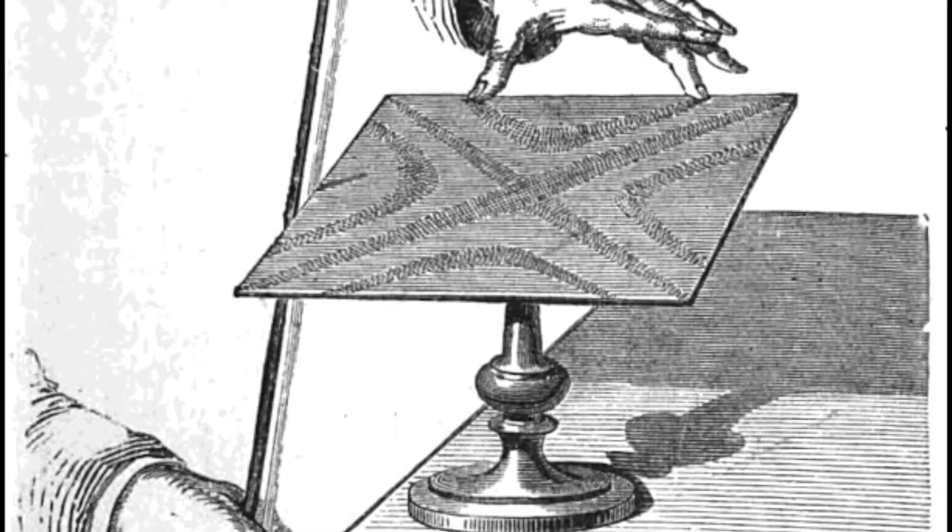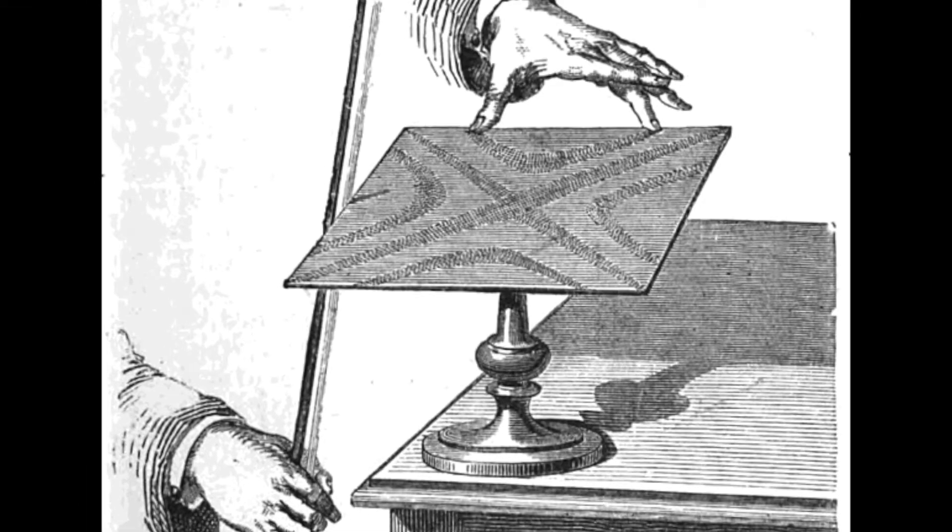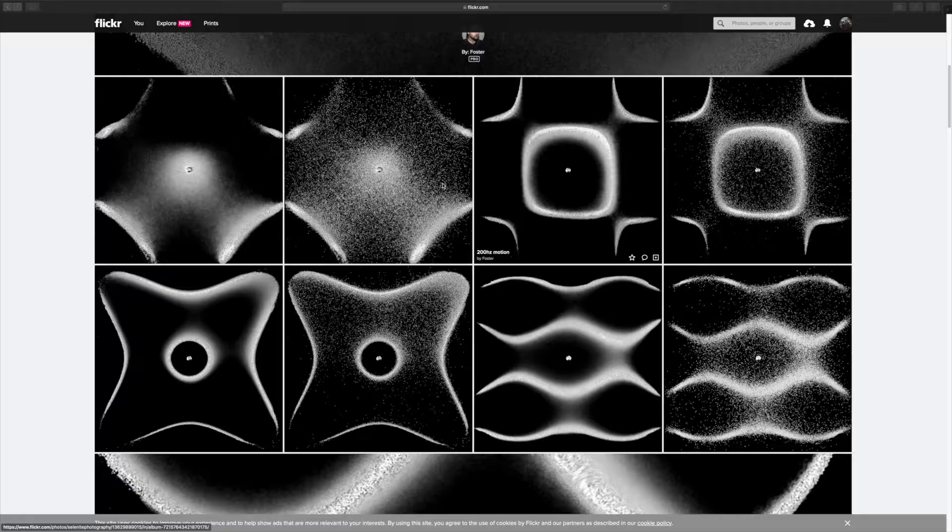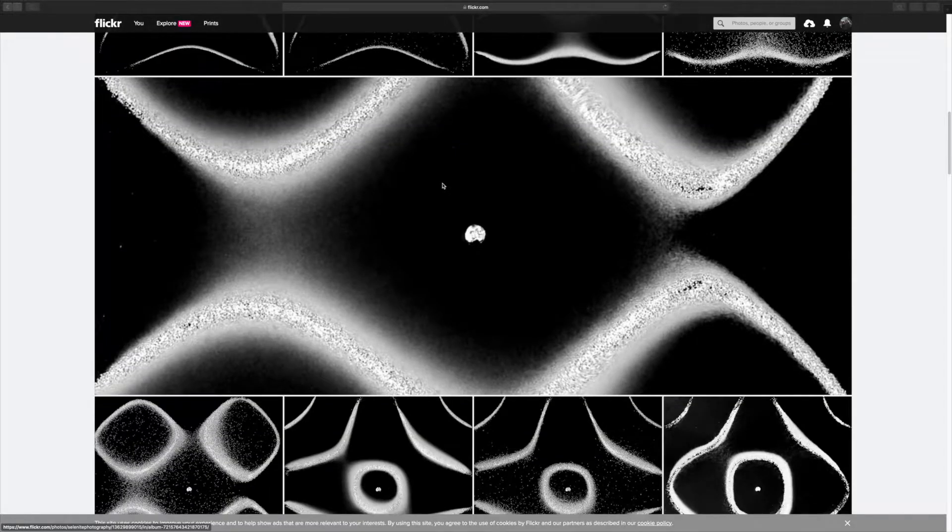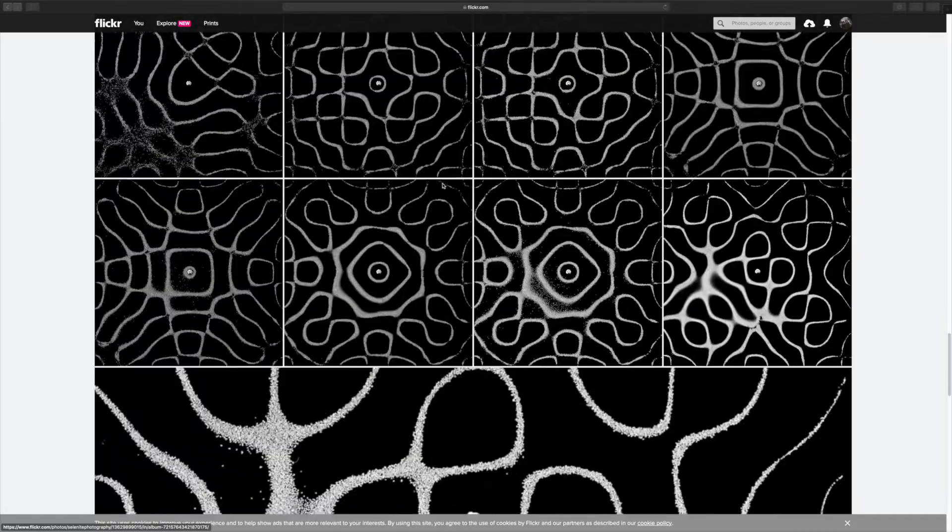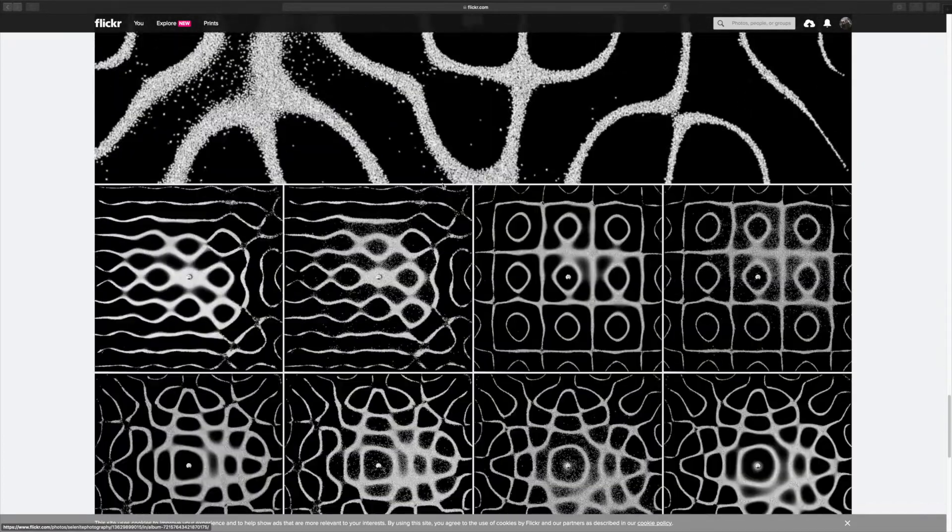Chladni ran a bow along the edge of a thin plate covered in flour and watched as the flour created patterns by collecting at those nodes. A photographer named Richard Foster has a cool album of similar patterns created using salt on a surface instead of flour. They're on his Flickr account and there's a link to this in the description below.